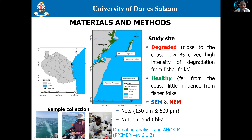The study was conducted along the coast of Tanga, Tanzania, as shown on the map. The study was divided into two parts based on the status of seagrass — degraded or healthy. Degraded sites are close to the coast, have low percentage of seagrass cover, and experience high intensity of degradation mainly from fishing using beach seines, ring nets, and trampolines. Healthy sites are far from the coast and experience little influence from fishers.